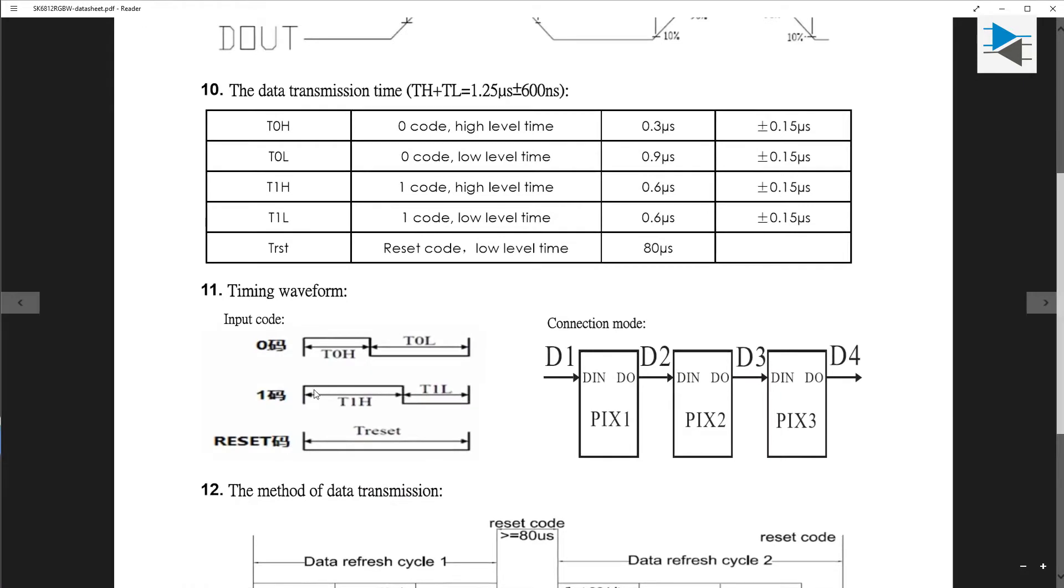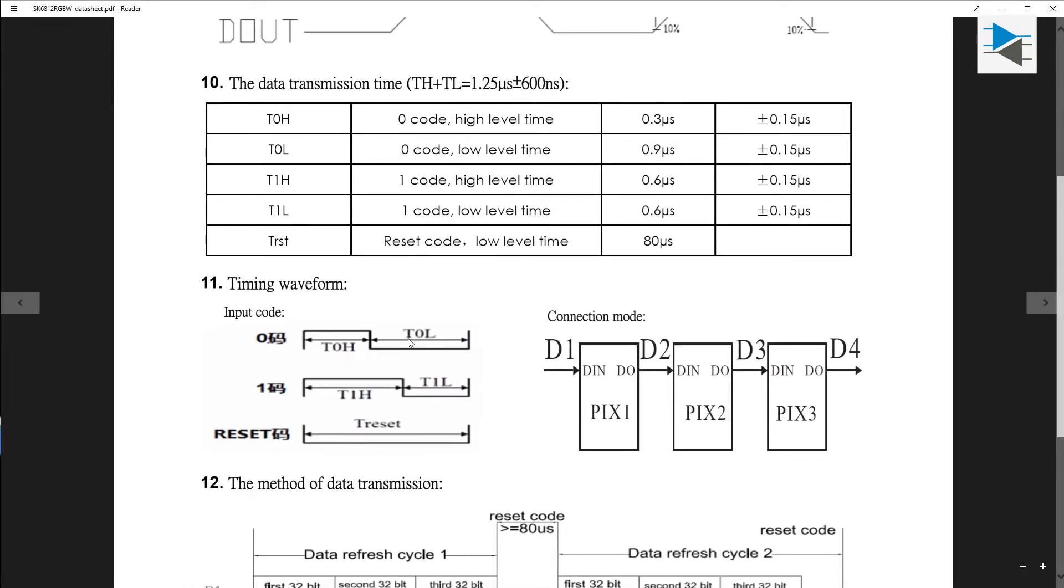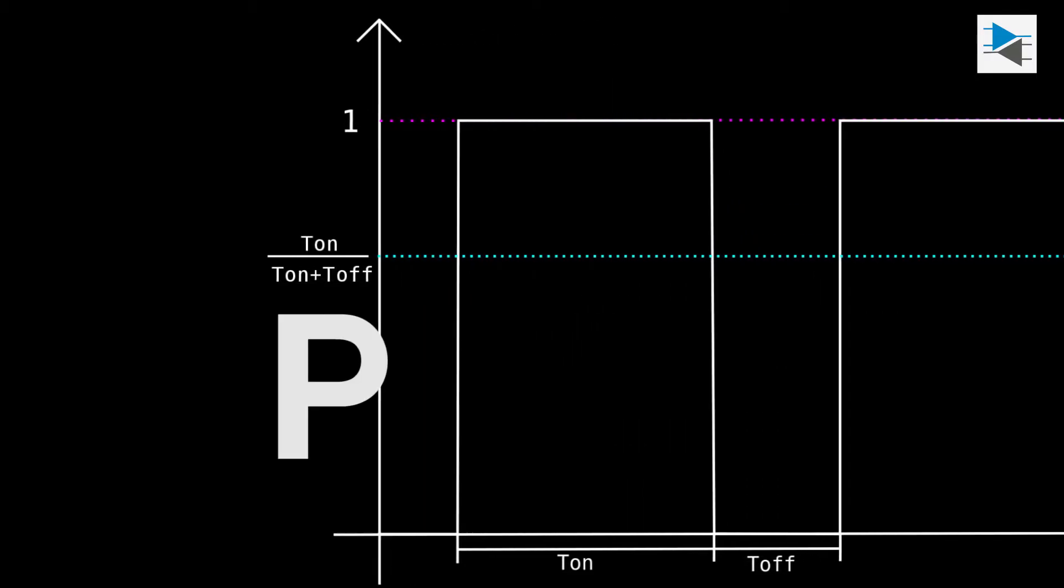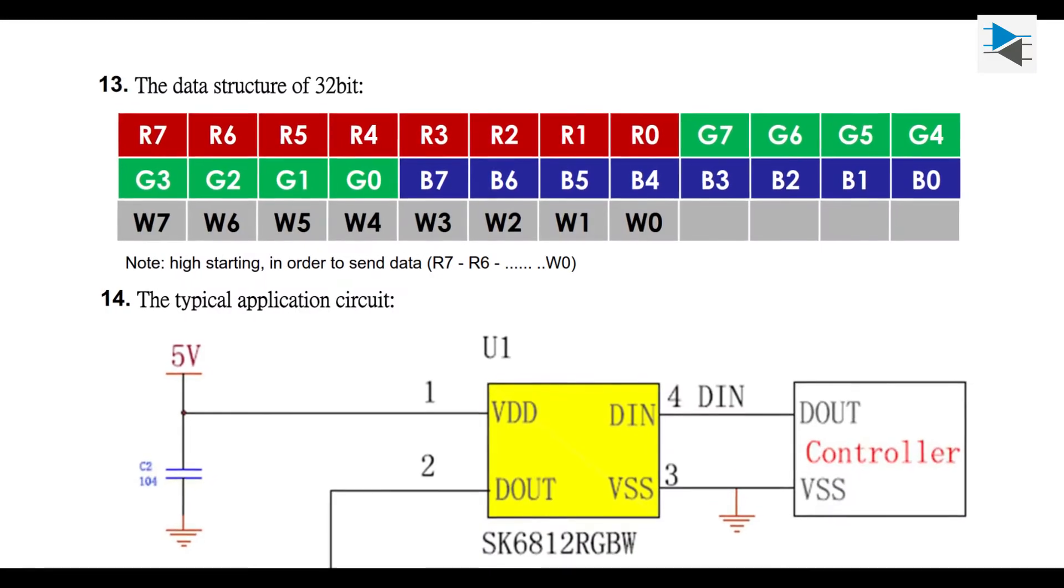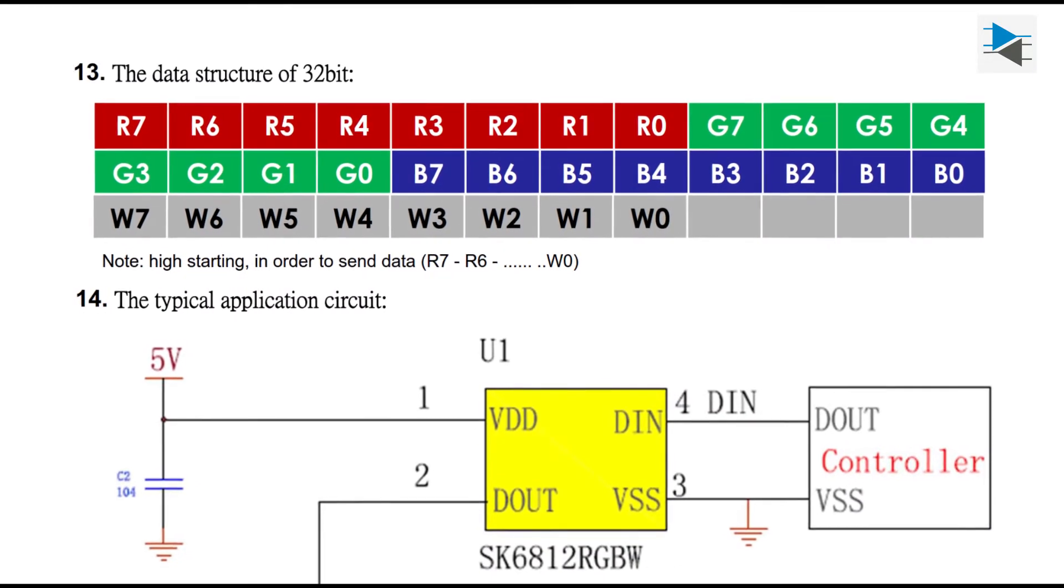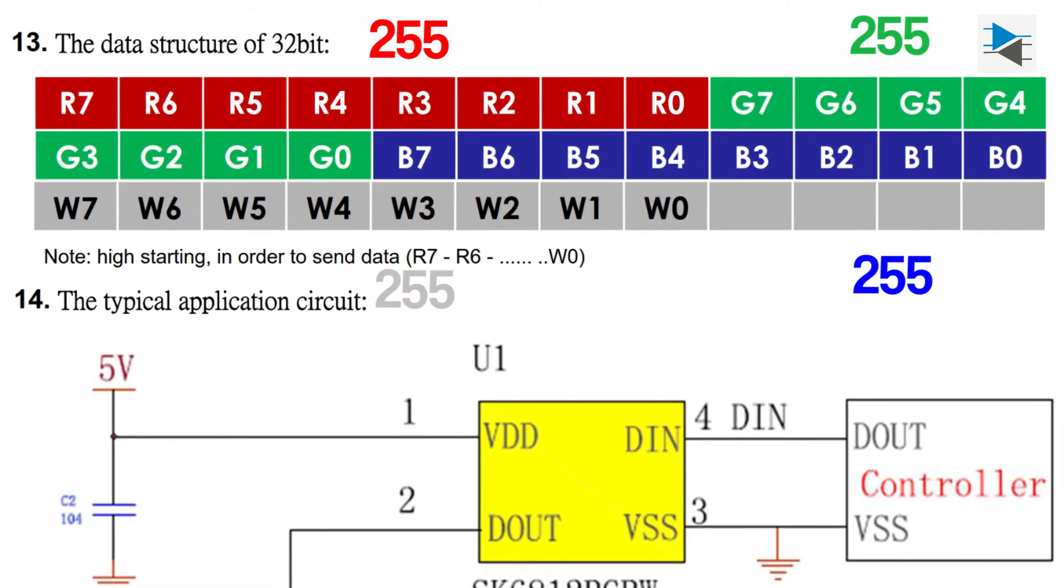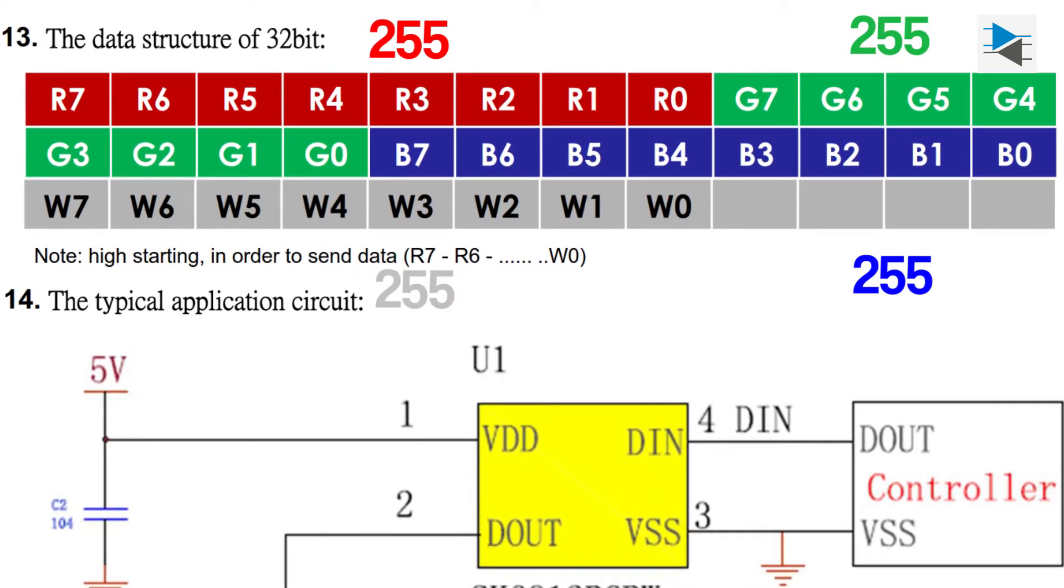If we look at the timing diagram, we see that the digital representation of ones and zeros is made with a variation of the high and low times of a square wave. Basically a PWM. We want to light up the LED as bright as possible, so we want all of the 8-bit values for the brightness of each color to be 255, meaning all ones and no zeros.